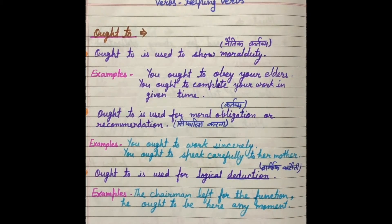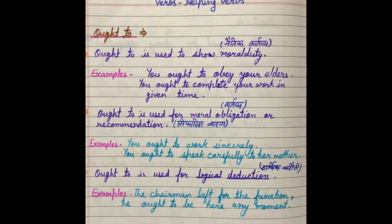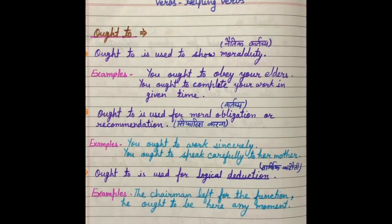In modal auxiliary verbs, I have already explained can, could, may, might, will, shall, should, would, and must. Today we will discuss ought to, need, need not, dare, dare not, and must not.